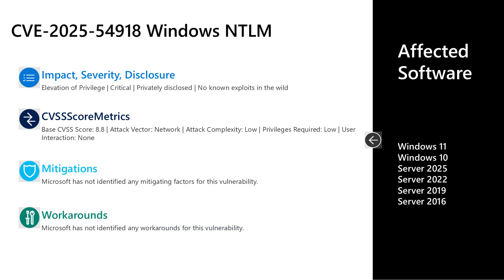Next is a vulnerability in Windows NTLM, documented as CVE-2025-54918. This is a critical elevation of privilege vulnerability, privately disclosed with no known exploits in the wild. It has a CVSS base score of 8.8 — the attack vector is over the network, attack complexity is low, low privileges are required, and no user interaction is required to leverage this vulnerability. There are no documented mitigations or workarounds. The affected software is all versions of Windows in mainstream support, whether Windows 10 and 11 on desktop or Server 2016 through Server 2025 on the server side.